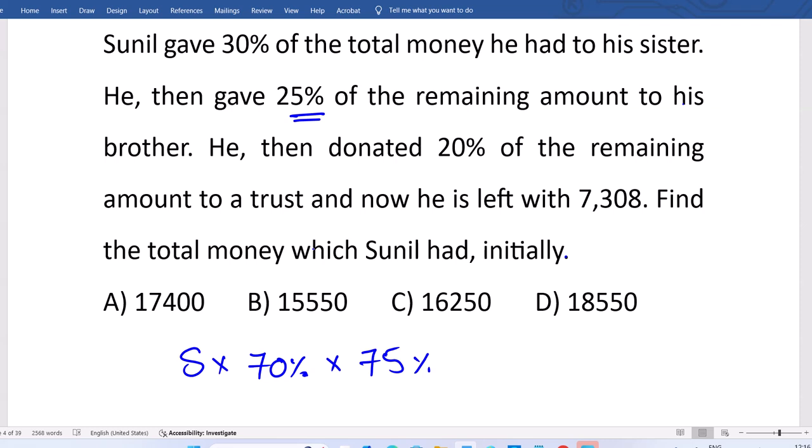Now, this is the remaining amount. Of that remaining, 20% is given to the trust. Available is 80%, which equals 7308.